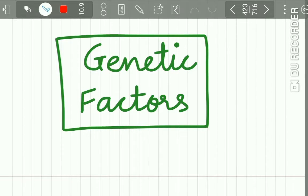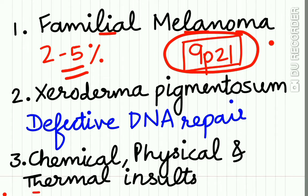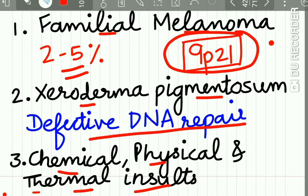Regarding genetic factors, the defective gene is on 9p21. People with xeroderma pigmentosum, in which there is defective DNA repair, are at a higher risk of malignant melanoma. Other risk factors include chemical, physical, and thermal insults to the skin.